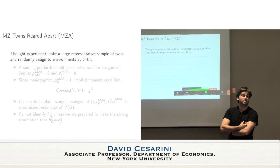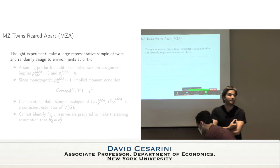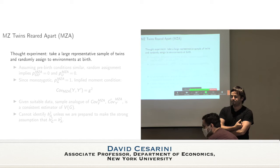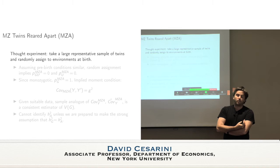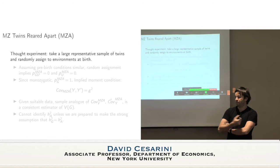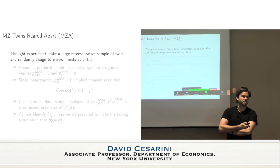One issue is the pre-birth environment. Twins aren't perfectly representative of the population in all kinds of ways — they weigh less at birth on average and shared the womb with a co-twin. That could have effects that complicate comparisons. For many purposes that might not be a first-order thing, but you should be aware of the implicit assumption you're making about representativeness.